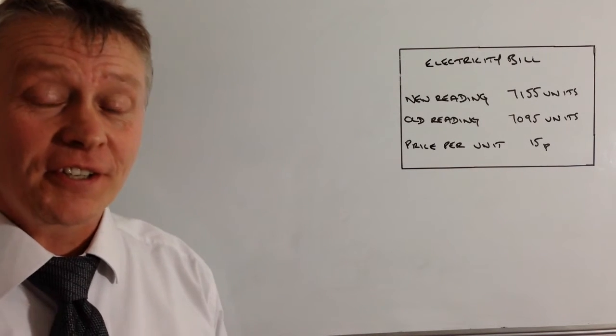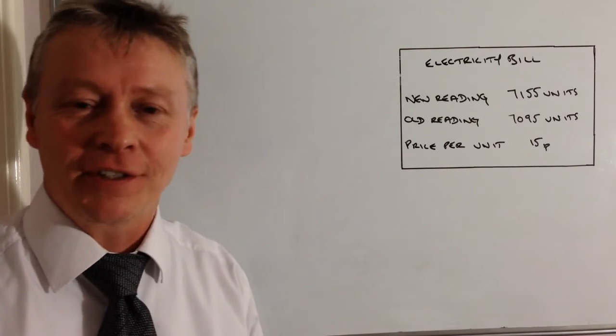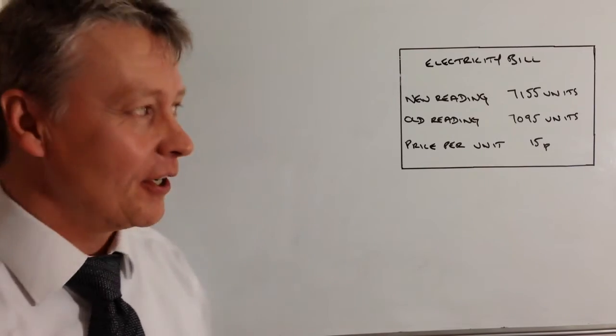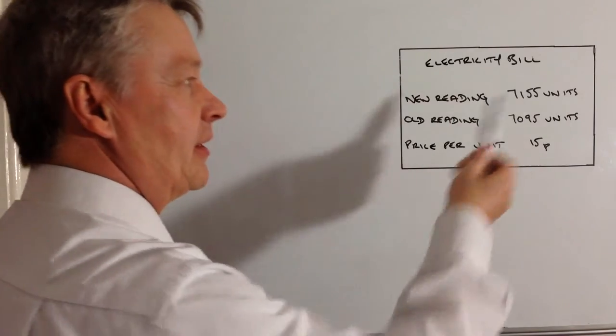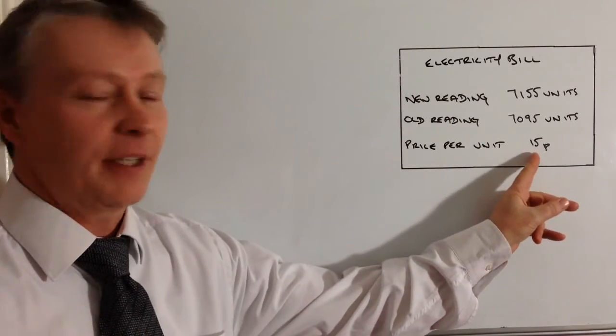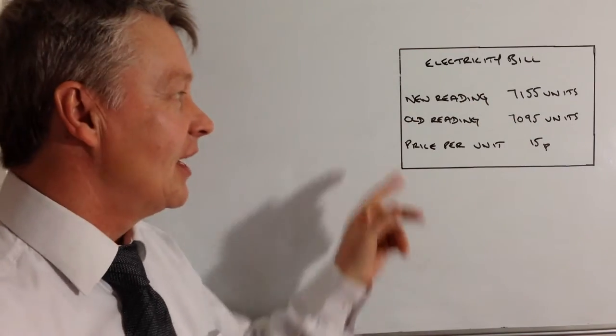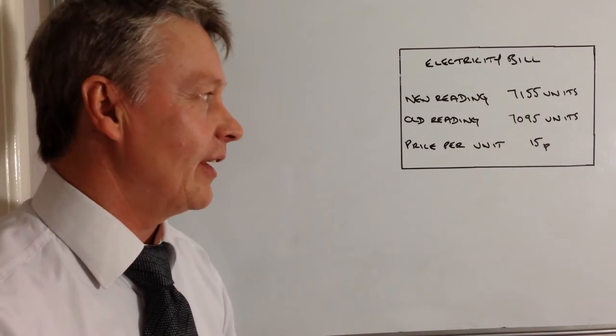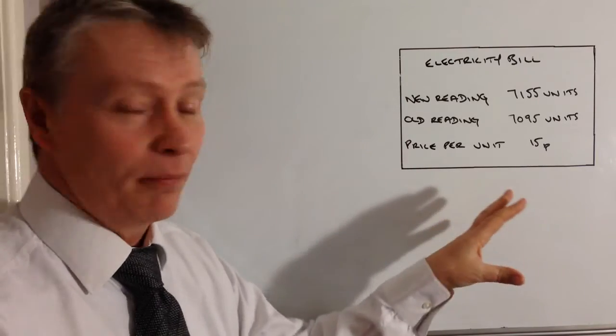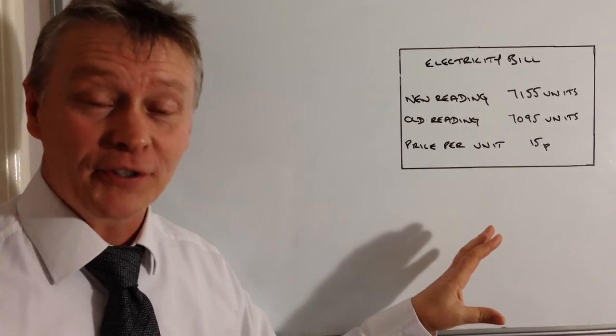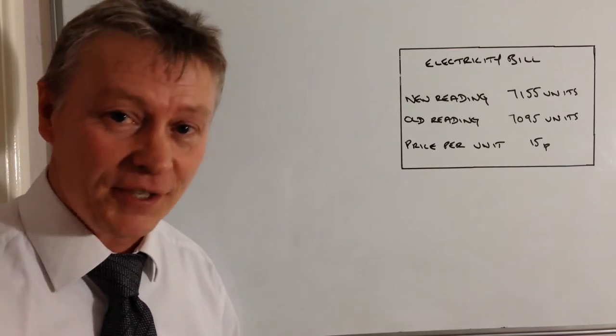Hi, so in this particular video, this is the fourth video in the series on functional maths. It's basically relating to real life situations. This one's fairly straightforward and this particular person is paying a price per unit on his electricity bill of 15 pence and he's had a reading and a new reading of 7155 units and his old reading 7095 units and the basic question is how much does he pay? You need to maybe follow the link below in the description. You'll be able to download this particular question and all the questions in this particular playlist.